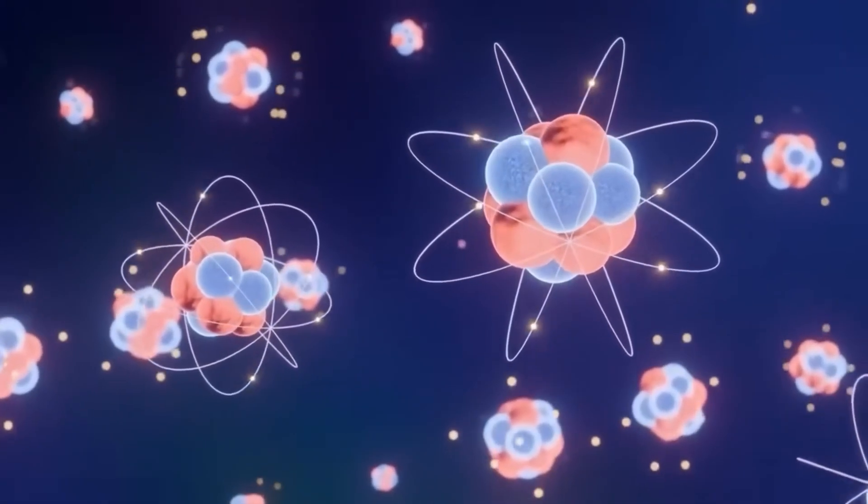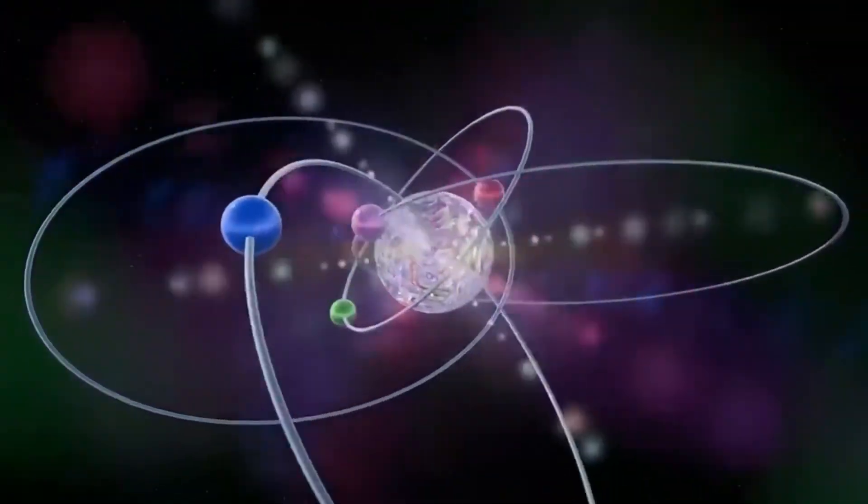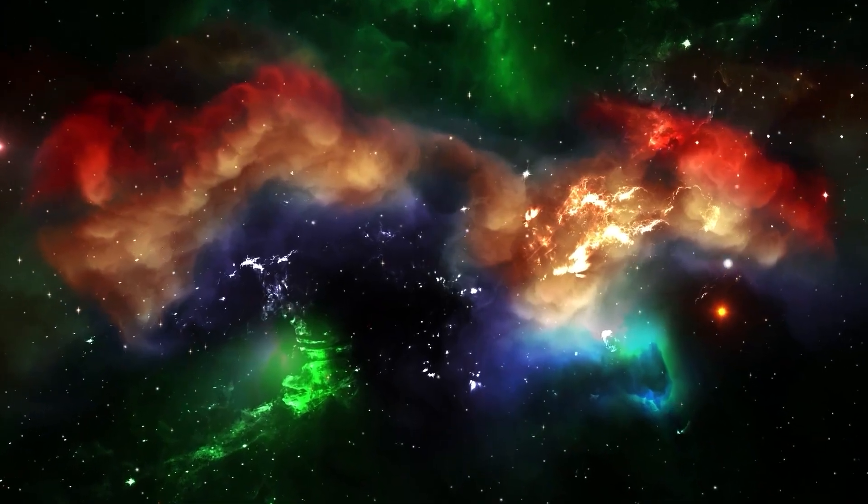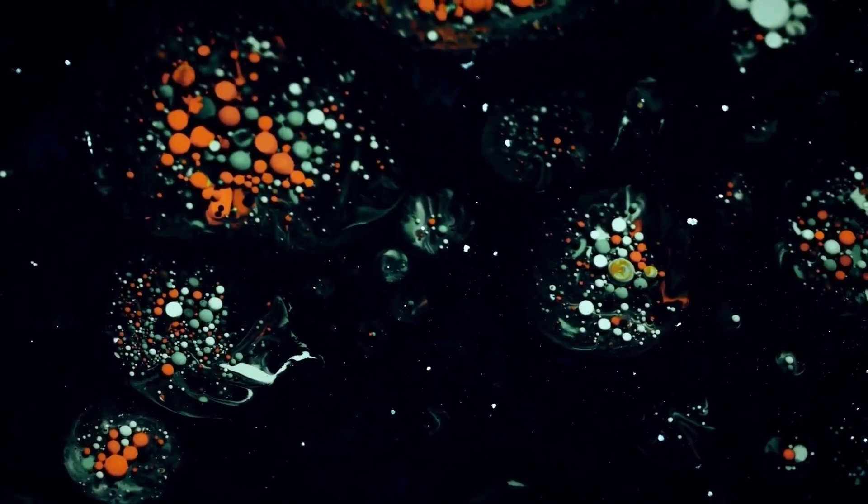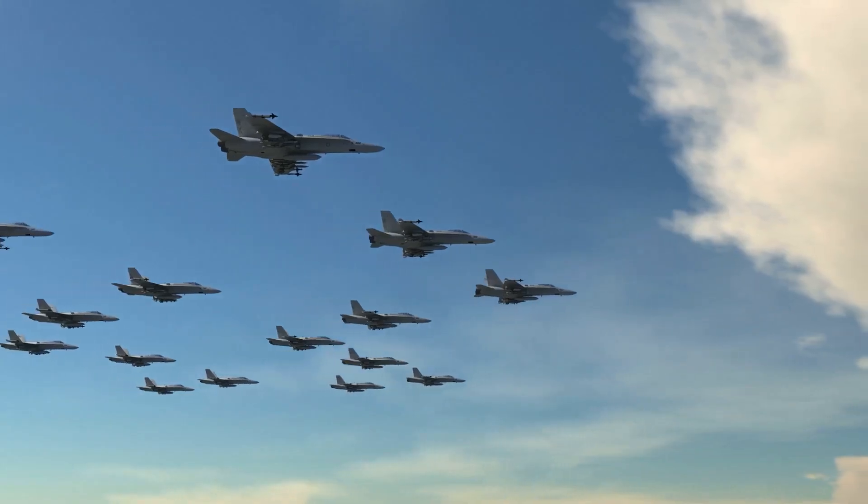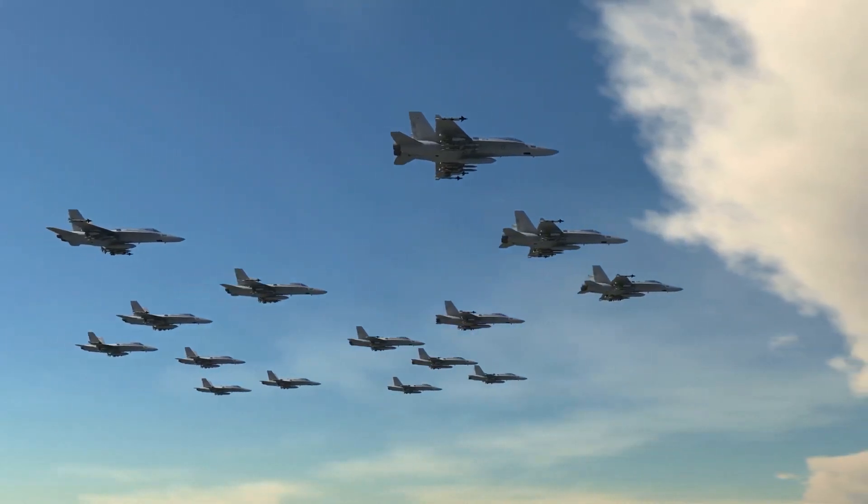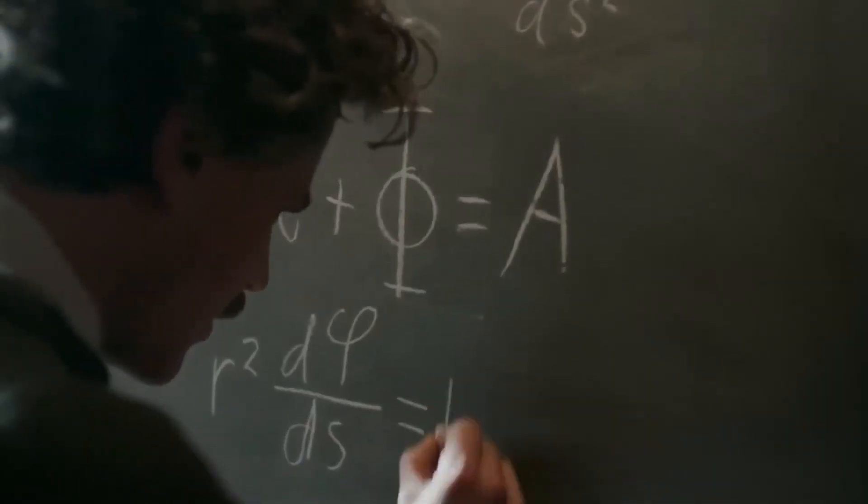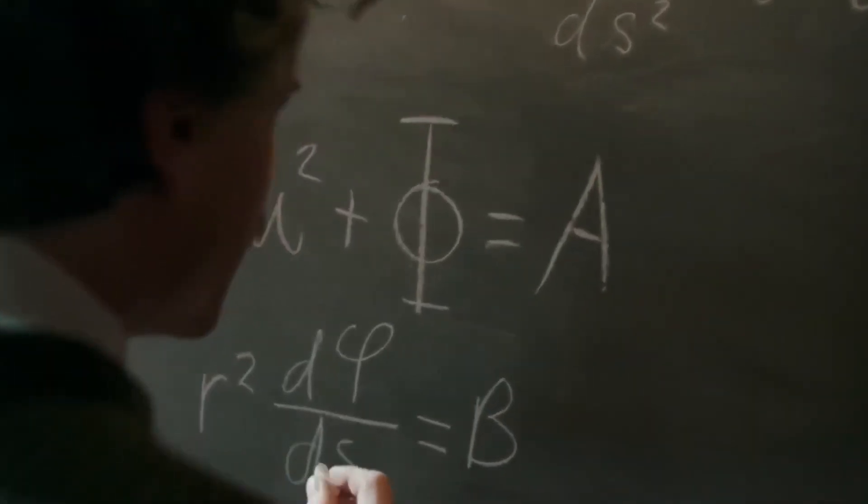Three centuries later, at the end of the 19th century, physicists thought they had nearly solved all the universe's secrets. From Newton to Maxwell, every phenomenon from the orbits of planets to the flow of electricity in a copper wire seemed perfectly explainable with mathematics. The world looked neat, logical, and deterministic.